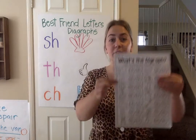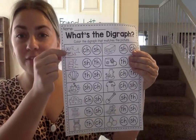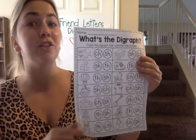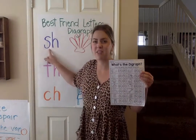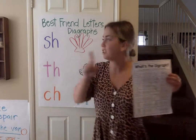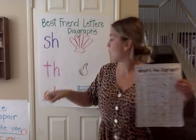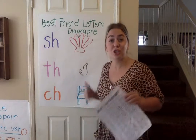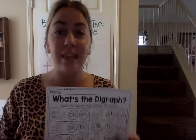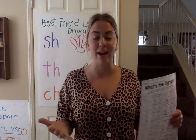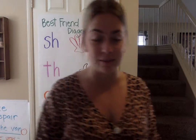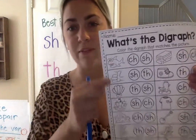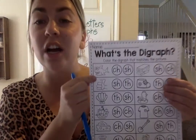Now this is what we have to do: we are given pictures on our worksheet and we have to decide which diagraph — which best friend letter sounds — they start with. It's either gonna be SH, TH, or CH. I'll work through a couple of them with you since it's a little tricky and brand new. It's okay to get confused sometimes and need help — go ahead and ask me, or ask your mom, dad, grandma, grandpa, brother, or sister.